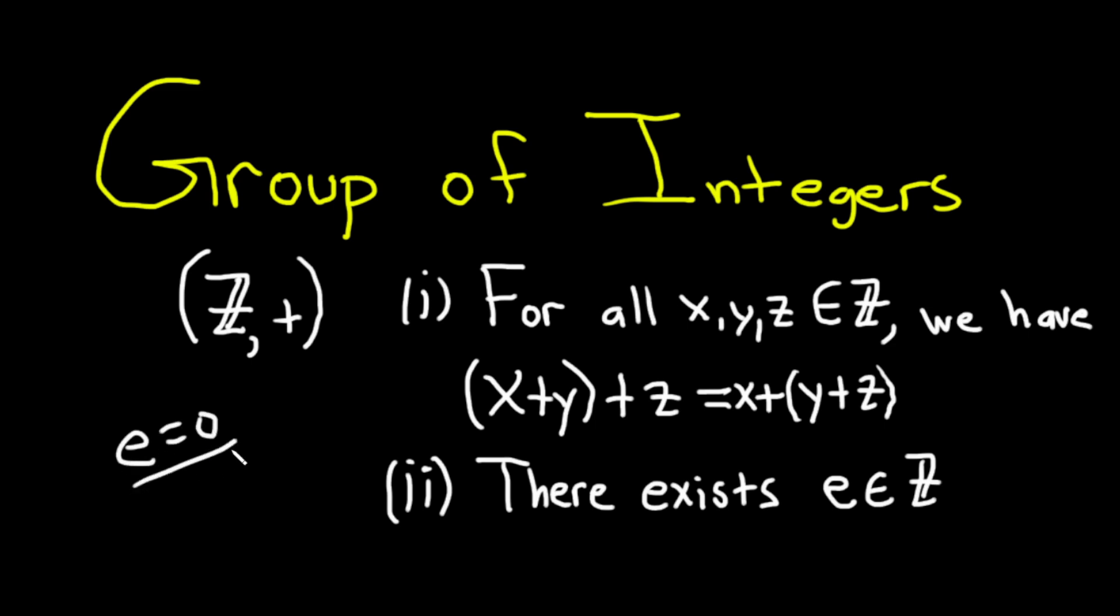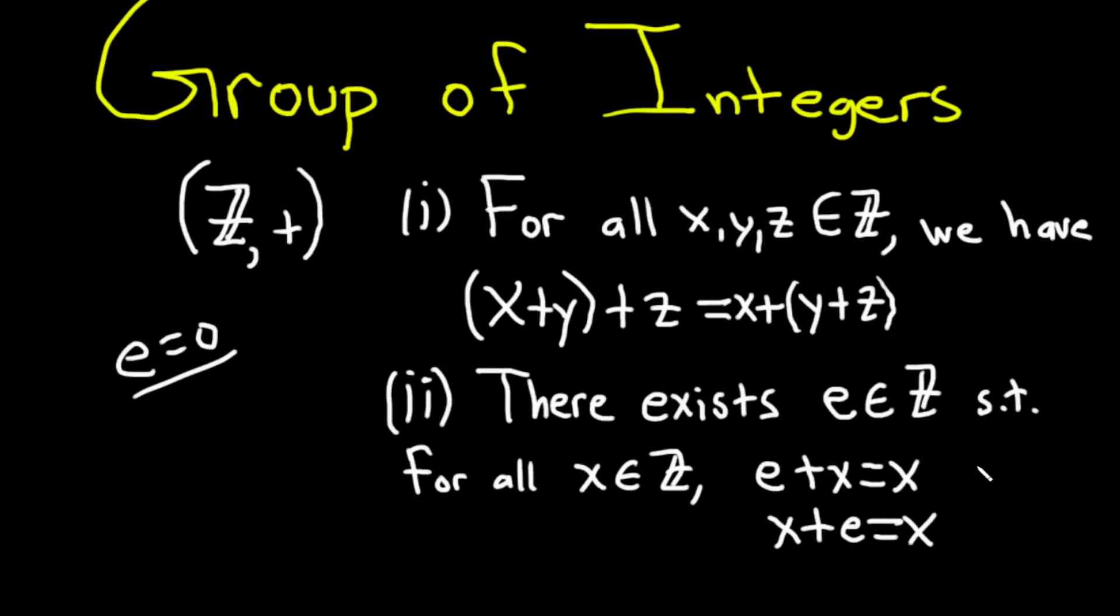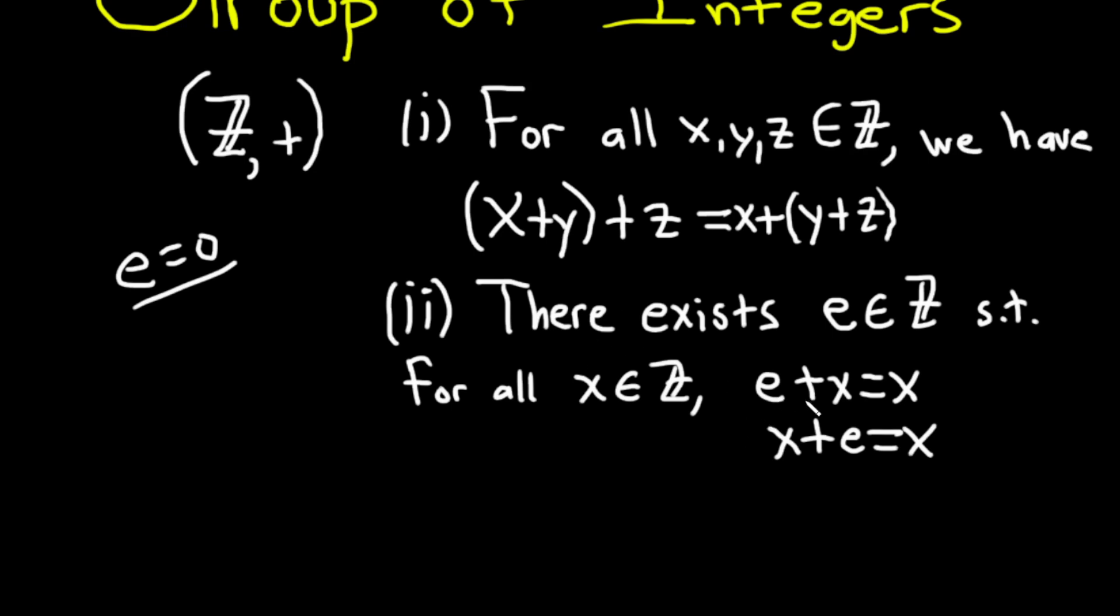Such that for all x in ℤ we have e plus x equals x and we have x plus e equals x. We have both of these conditions. And again think of zero: zero plus x is x, x plus zero is x. So zero is the additive identity for this additive group of integers. It's an additive group because the operation is addition.